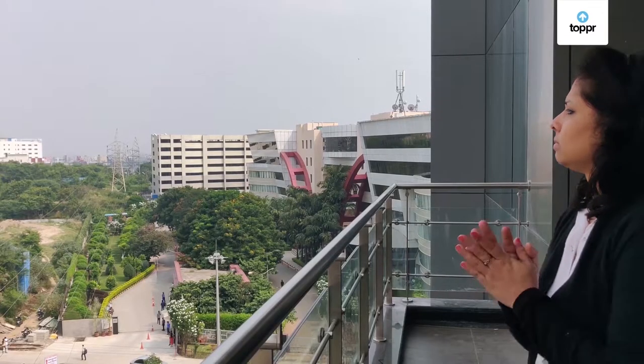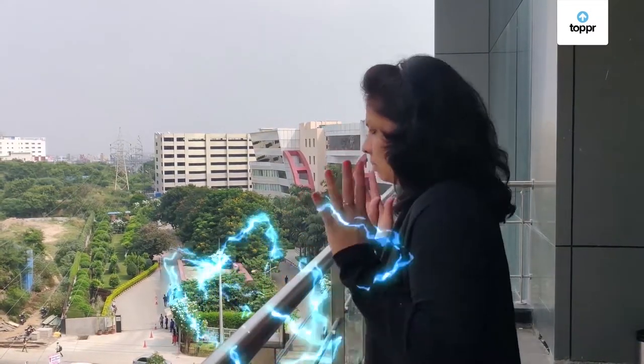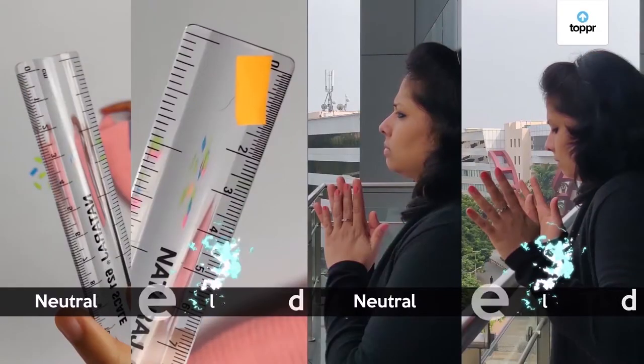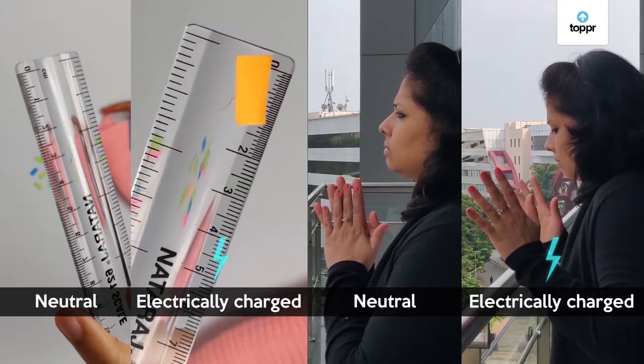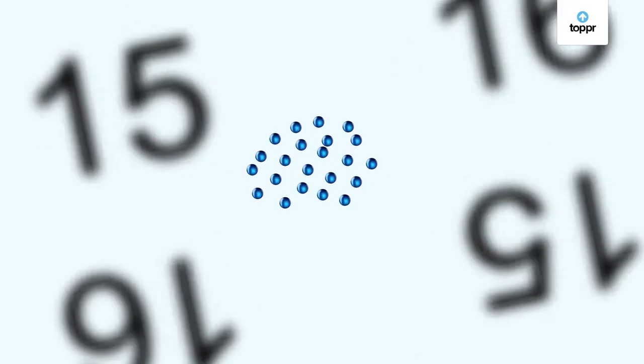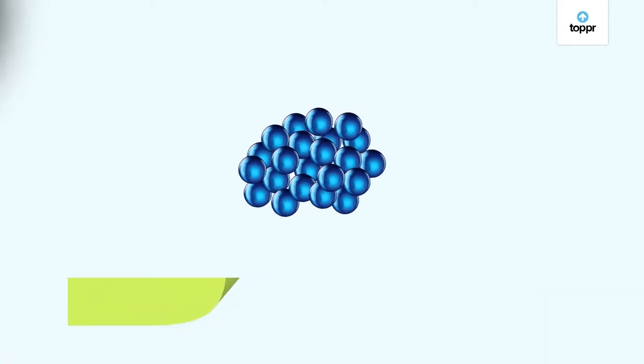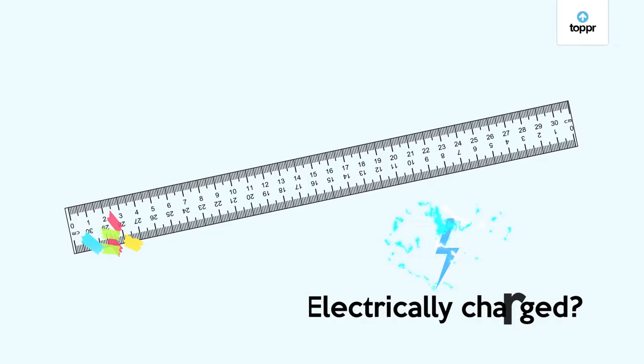Even if you wear woolen cloth for a long time, you may feel a sudden shock when you touch something. All these are examples of neutral objects becoming electrically charged. Scientists knew that matter and the atoms that make it up are neutral. Then how can objects become electrically charged?